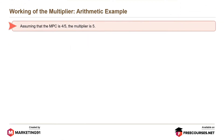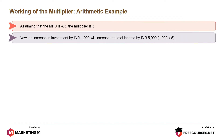Assuming that the MPC is 4 divided by 5, the multiplier is 5. Now, an increase in investment by Rs. 1000 will increase the total income by Rs. 5000, that is, Rs. 1000 multiplied by 5, which is the multiplier.